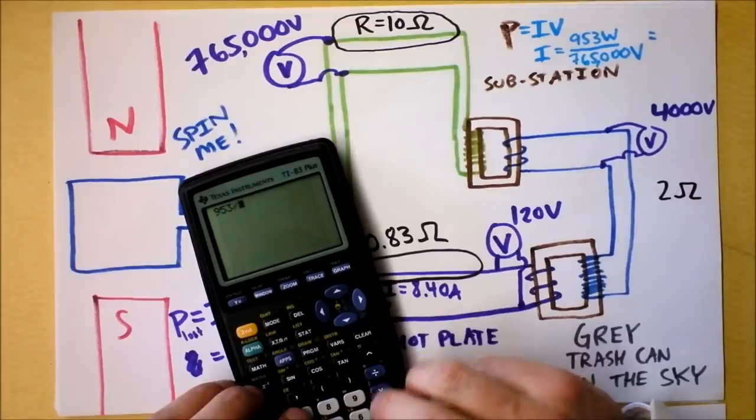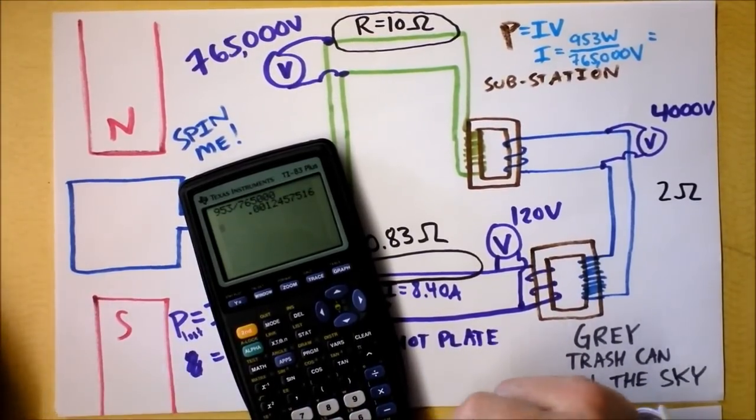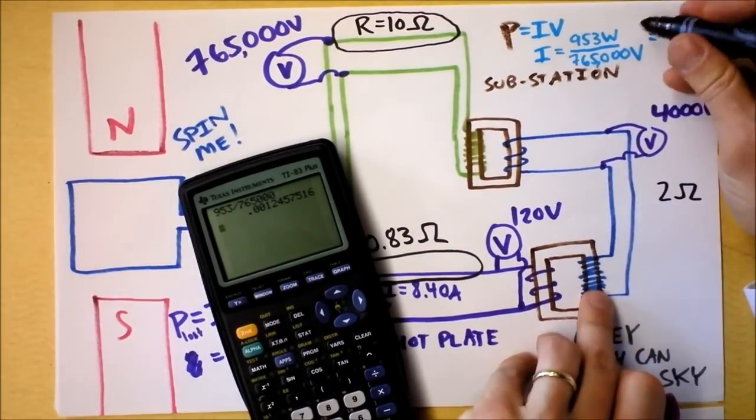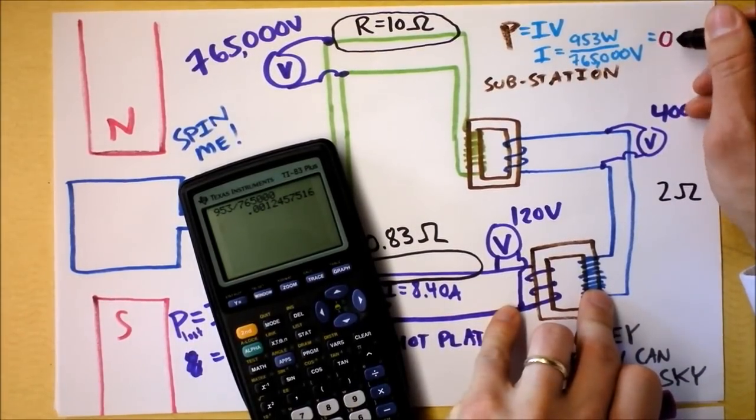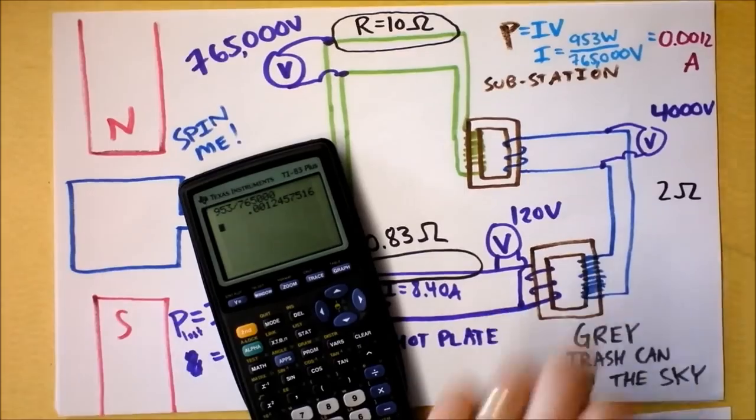That current is 0.0012 amps. It's a very small current going through here.